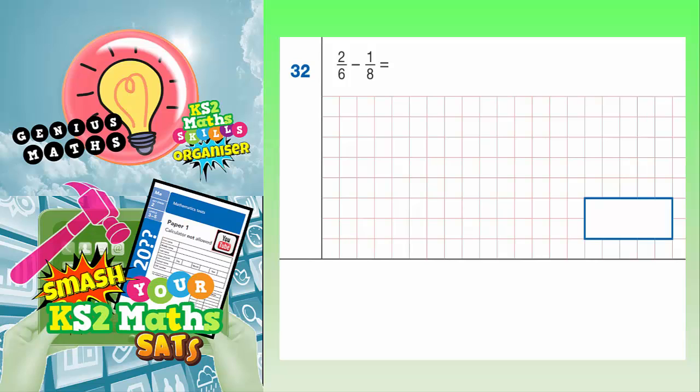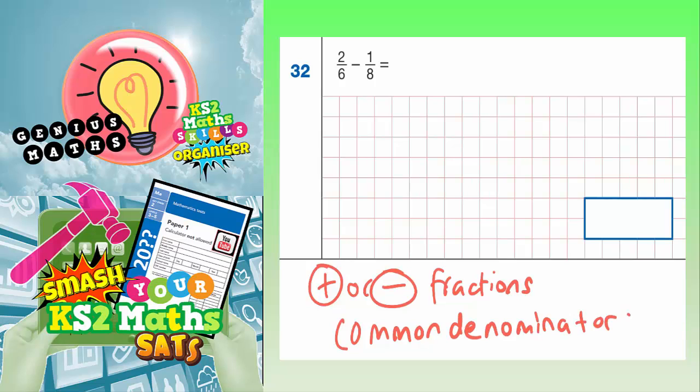Question 32. 2/6 take away 1/8. Now whenever we are adding or subtracting fractions, we basically need to sort out a common denominator. In other words, we need the two numbers on the bottom of the fractions to be the same.